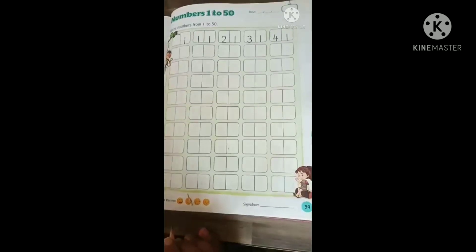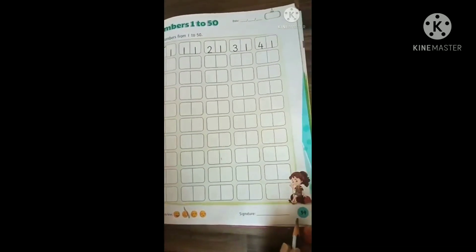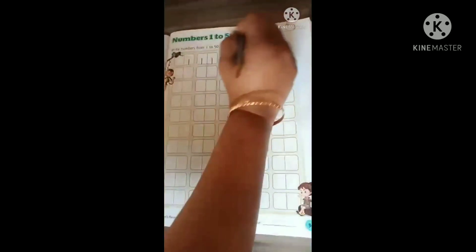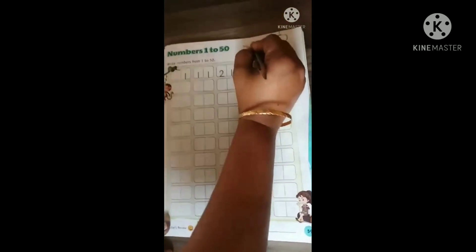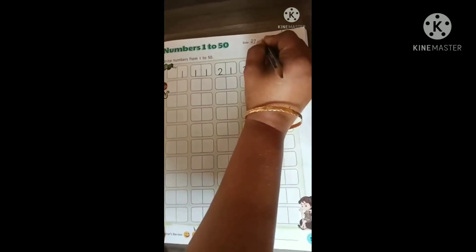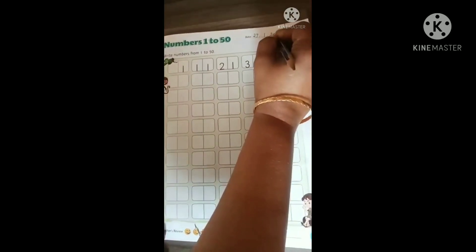The same book. Page number 39. Write, first of all, today's date. 27, January 2021.